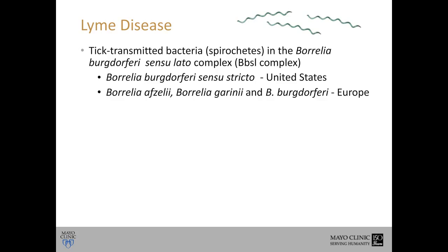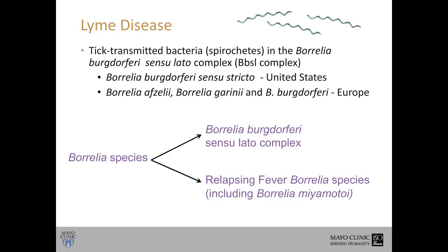There are others as well. Borrelia afzelii, Borrelia garinii, and Borrelia burgdorferi cause Lyme disease in Europe, and some of these species cause disease in parts of Asia. The Borrelia species are even more diverse than just the sensu latu complex — there is a large group called relapsing fever Borrelia species. Today I'll only be discussing the Borrelia burgdorferi sensu latu complex, the agents of Lyme disease, and not the relapsing fever Borrelia such as Borrelia miyamotoi, which has been in the news recently.